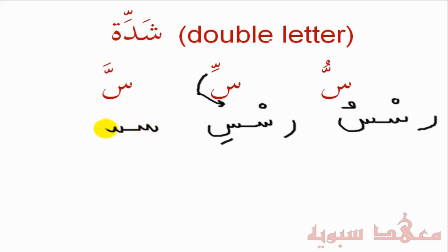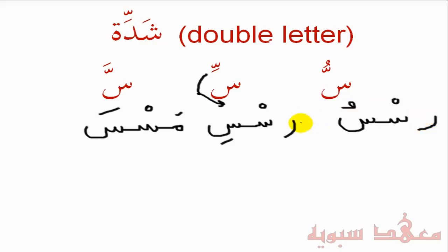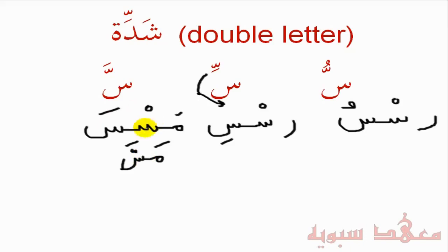Similarly, the Seen with the Shaddah and Fathah has one Seen and another Seen — there's a Sukun on the first and a Fathah on the second. Let's change the letter and put the Meem joined to it, with a Fathah, giving us 'Masseh.' This is actually a verb — Masseh means 'to touch.' So a double letter will not be written out explicitly; it will be represented with the Shaddah.